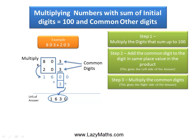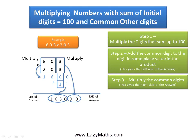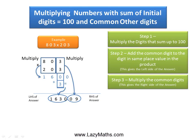And then as a last step, we simply multiply 3 and 3 together and we get 09 as the right-hand side of the answer.